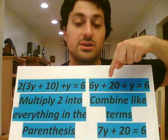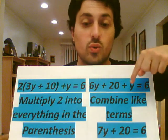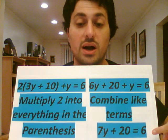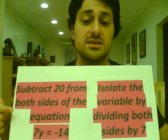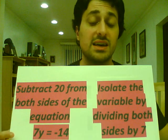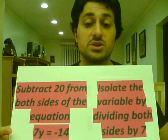And then we will combine the like terms, which are the 6y and the y, which will leave us with 7y plus 20 equals 6. Then we will subtract 20 from both sides of the equation, which will leave us with 7y equals negative 14.